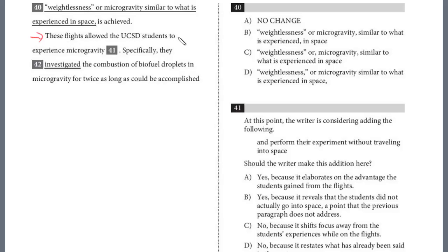These flights allowed the UCSD students to experience microgravity. So question 41, at this point right here, the writer is considering adding the following: and to perform their experiment without traveling into space. If you recall from the previous video, it described how the students were able to simulate the effects of space. At the end of 40, they achieved weightlessness or microgravity similar to what's experienced in space. This is relevant here. Whenever you're adding and deleting, ask if it's relevant, because they didn't actually go into space, but they simulated the conditions. They were able to perform their experiment without traveling into space.